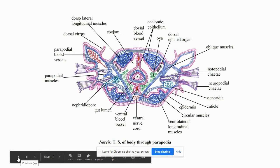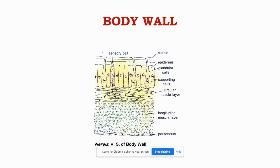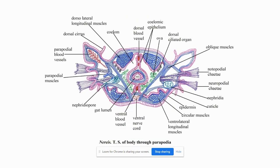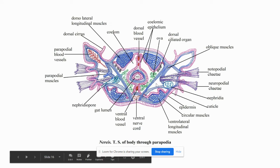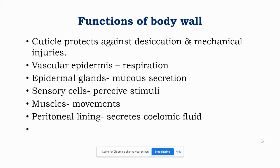The next layer below the muscles is the peritoneum. It is the innermost layer of the body wall. The parietal layer of peritoneum or the coelomic epithelium covers the muscles internally and forms the lining of the body cavity. Functions of the body wall: the cuticle protects against desiccation and mechanical injuries; the epidermis is highly vascularized and helps in respiration; the epidermal glands secrete mucus and help in lubricating the worm and the burrows; the sensory cells help in perceiving stimuli; the muscles help in movement; and the peritoneal lining secretes coelomic fluid.